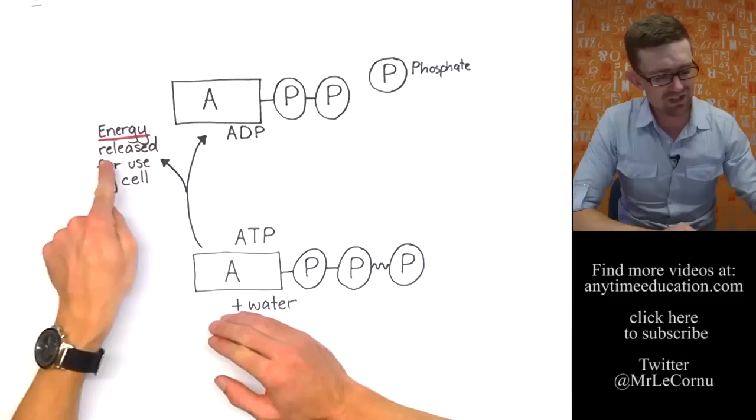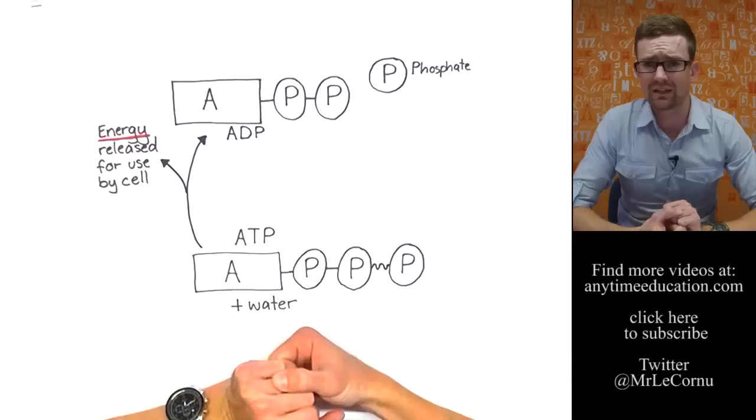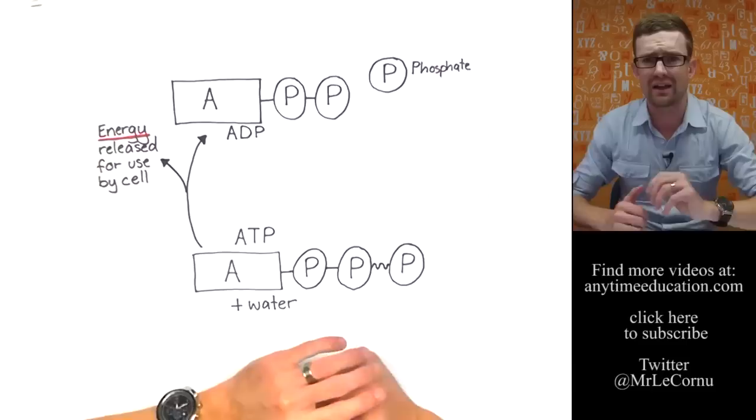And when that conversion takes place, energy is released and it's used by the cell for the things that we just looked at. Synthesis, movement, active transport, all those sorts of things. Here's the catch. Cells need ATP continuously. They always require ATP to break it down to ADP.